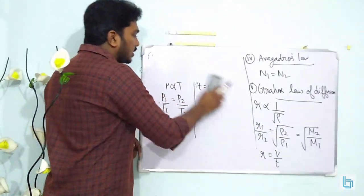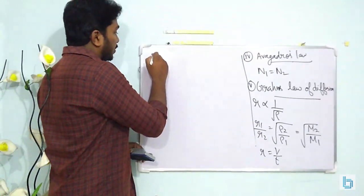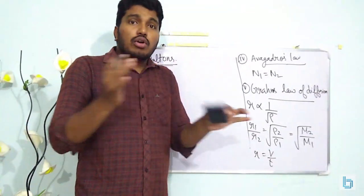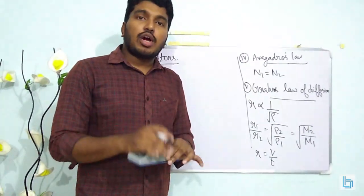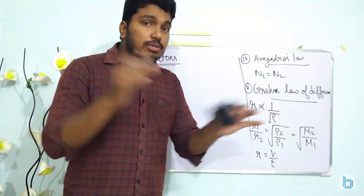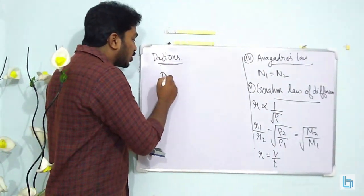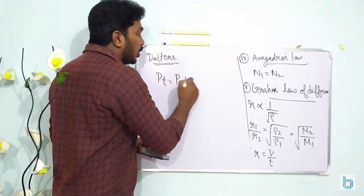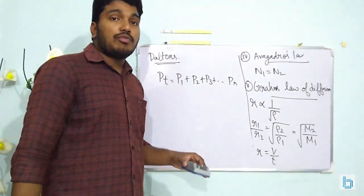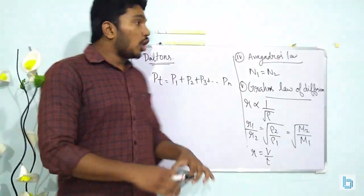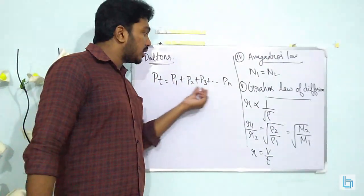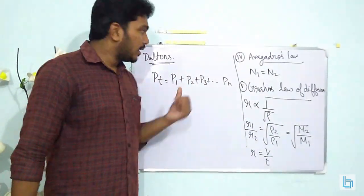The next law is Dalton's law of partial pressures. Suppose we are taking a mixture of non-reacting gases together, each exerting a pressure P1, P2, etc. When taken together, they exert a total pressure Pt = P1 + P2 + P3 + ... + Pn. According to Dalton's law, the total pressure exerted by a mixture of non-reacting gases equals the sum of the individual pressures each gas exerts.